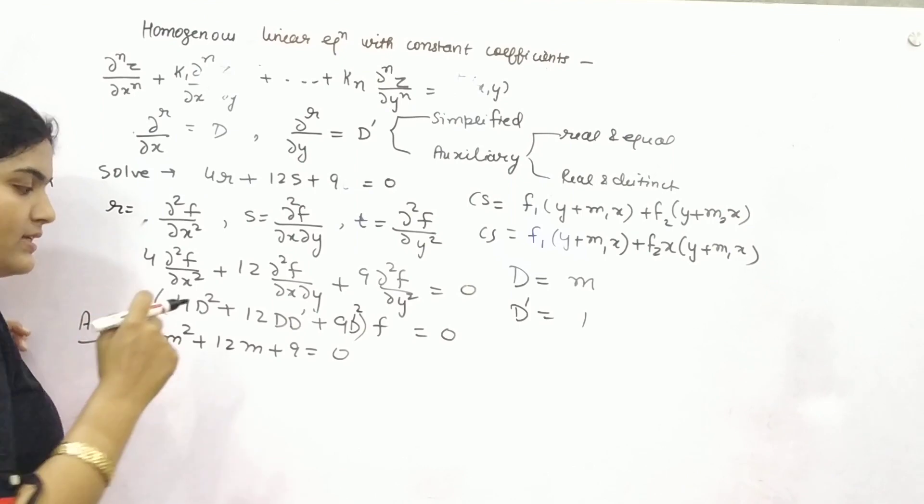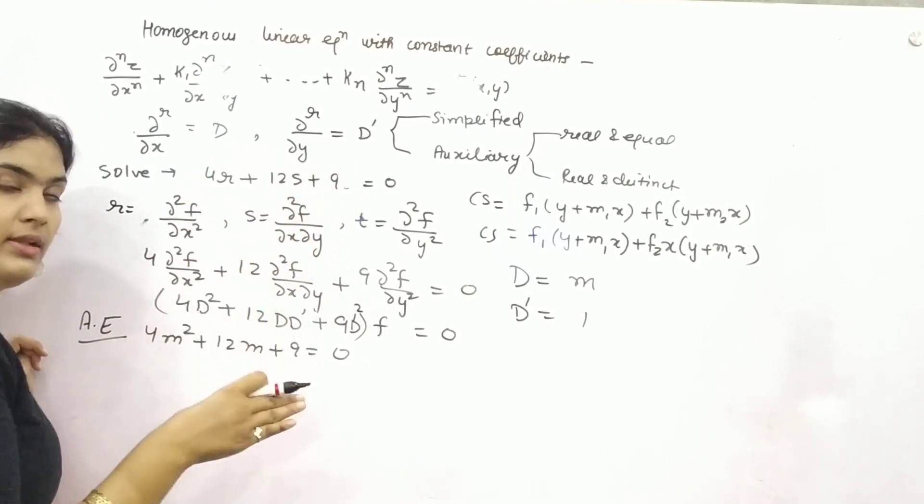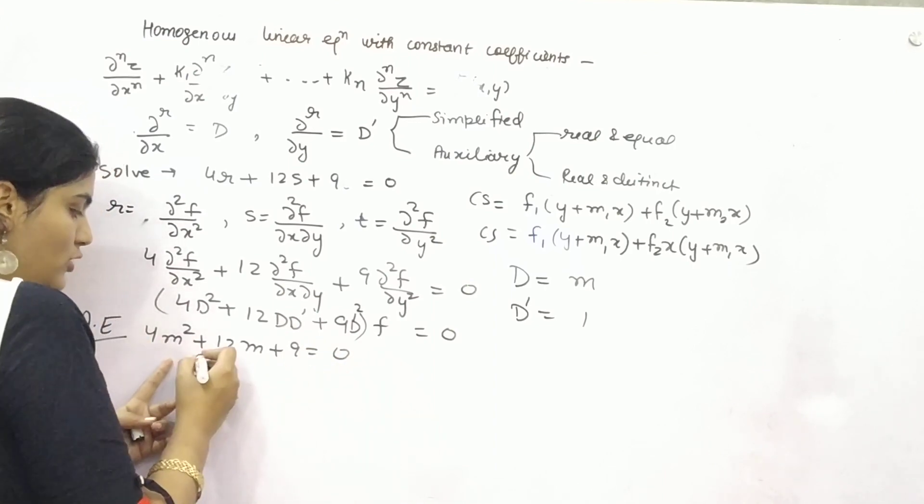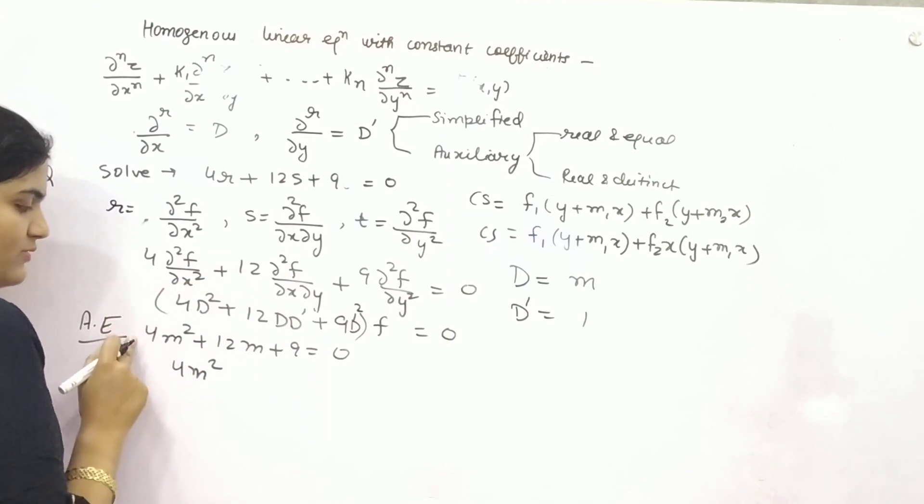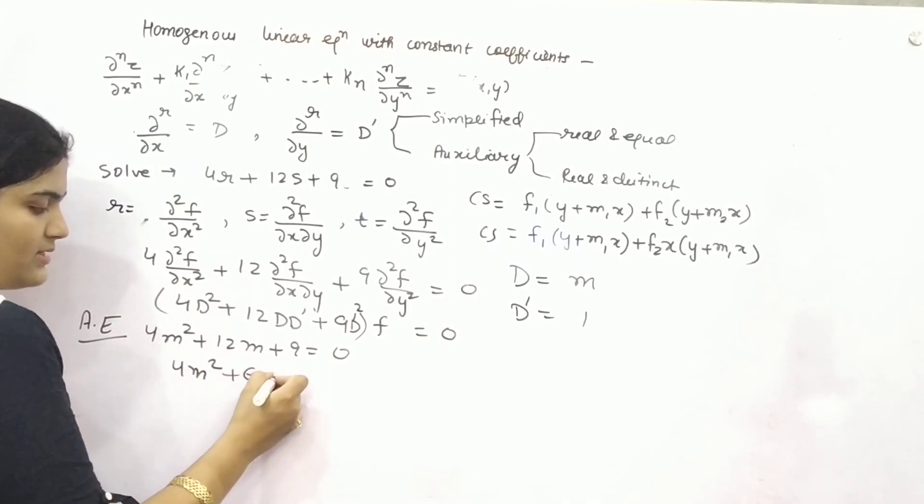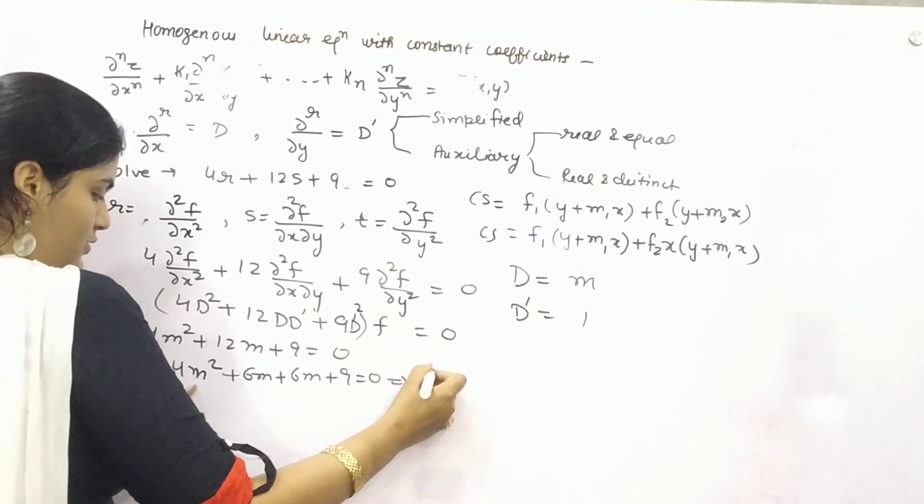Now solve this and find out the value of m. Check whether roots are real or distinct. You can use splitting the term method. 9 times 4 is 36. You can split it as 6m, 6m.